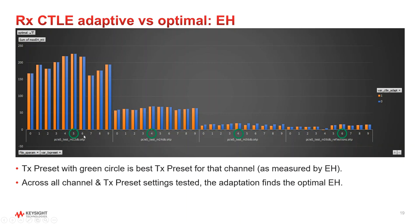The blue results are the optimal results found by static value sweeping. The orange are the results of CTLE adaptation. The green circle highlights the overall best transmit preset used for the channel.